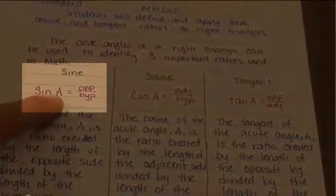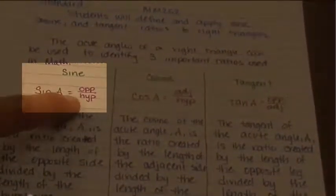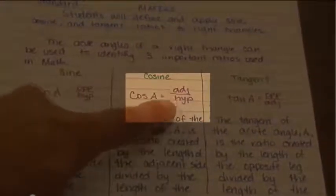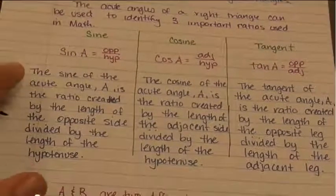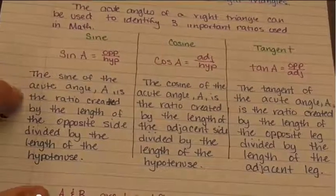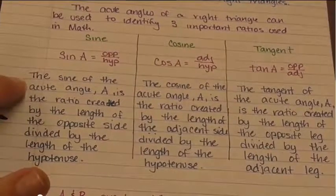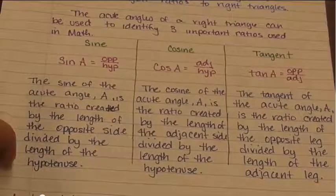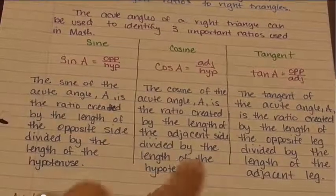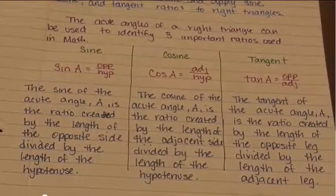Your sine for angle A is the length of the opposite side divided by the hypotenuse. Your cosine for angle A is the adjacent side divided by the hypotenuse. Your tangent for angle A is the opposite side over the adjacent side. So the sine of the acute angle A is the ratio created by the length of the opposite side divided by the length of the hypotenuse.